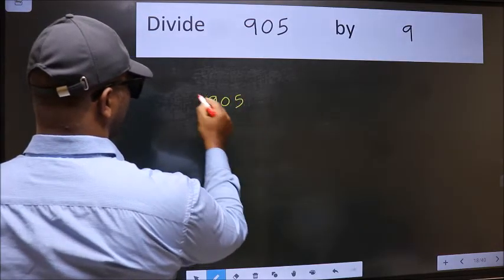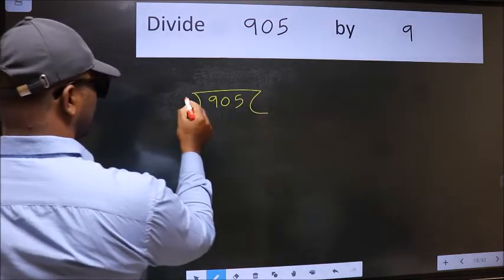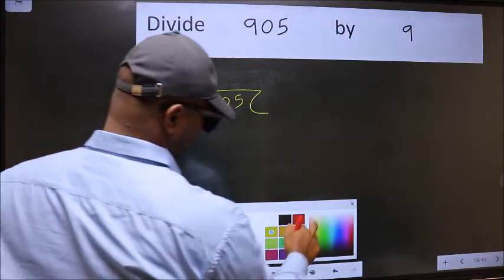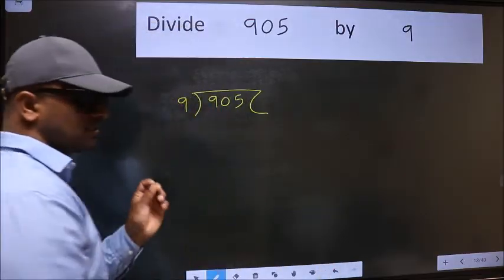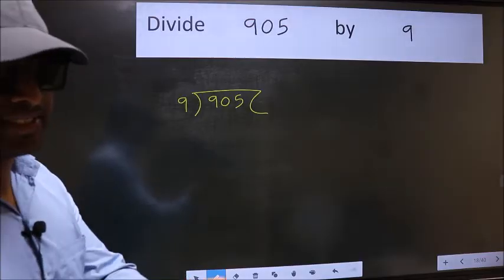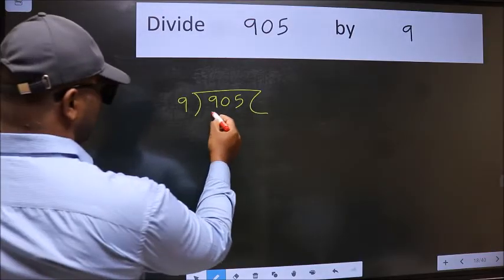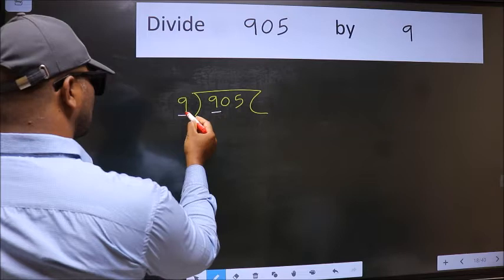905 and 9 here. This is your step 1. Next, here we have 9. Here also 9.